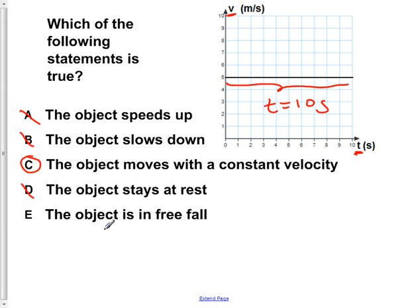Now E states that the object is in free fall. If an object is in free fall, so let's say this here is our ground and our object is this ball here. What forces are acting on it?